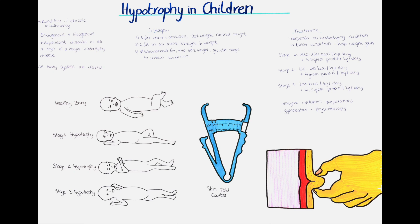There are two main reasons for hypotrophy. Either a malnutrition with decreased intake of proteins, which can have different factors, some of which include social deprivation or abandonment. This is called exogenous hypotrophy.